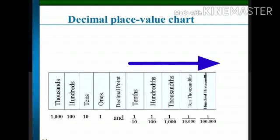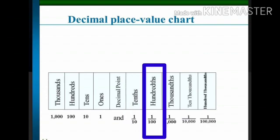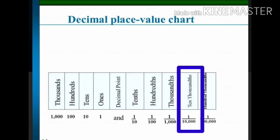The places of decimal part are as follows: tenths, hundredths, thousandths, ten thousandths, and so on.